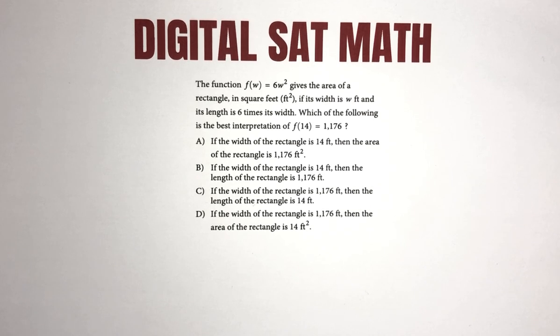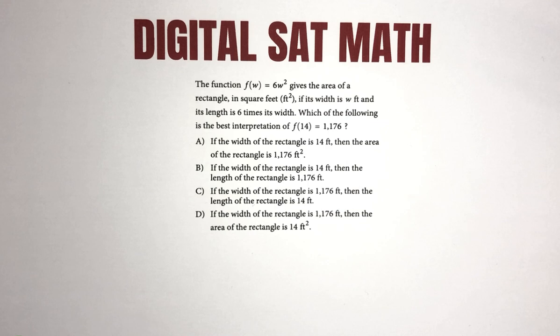It gives the area of a rectangle in square feet if its width is w feet and its length is six times its width. Which of the following is the best interpretation of f(14) = 1,176?